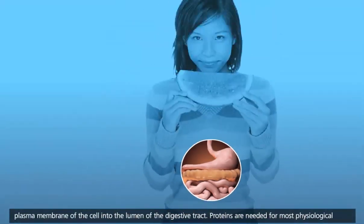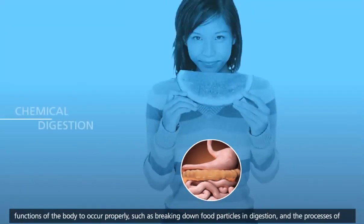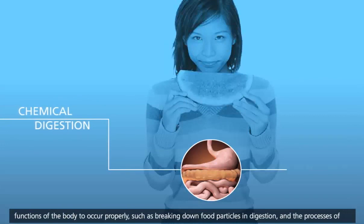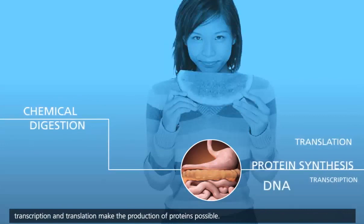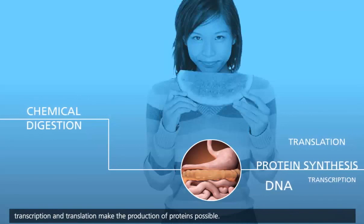Proteins are needed for most physiological functions of the body to occur properly, such as breaking down food particles in digestion, and the processes of transcription and translation make the production of proteins possible.